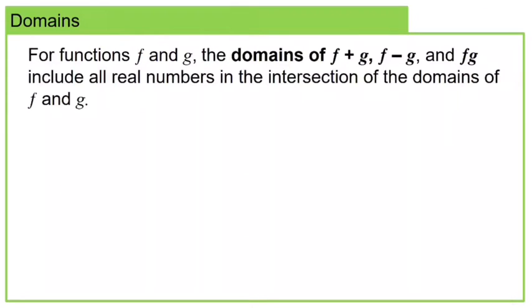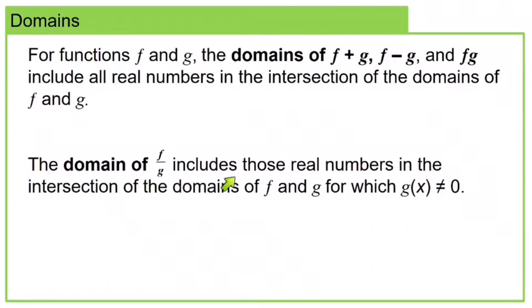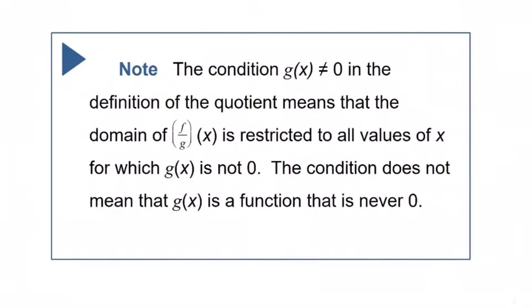It's a little different for f÷g. The domain of f÷g includes those real numbers in the intersection of the domains of f and g for which g(x) is not equal to zero. We still need the intersection of the two individual domains; however, we have to leave out any x values that would cause the bottom function to equal zero, because those values make the quotient function undefined. Note: this doesn't mean g(x) can never equal zero — it just means any numbers that cause g to equal zero must be excluded from the domain.